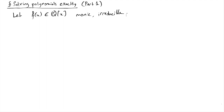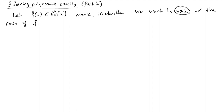What does 'work' mean? This is the important point. We want to be able to do arithmetic, maybe check equality between numbers that come from roots of f. But remember that we cannot write down the roots of f in terms of square roots, cube roots, etc. — in terms of radicals. This is what Galois says.